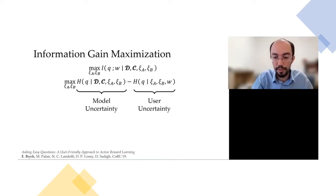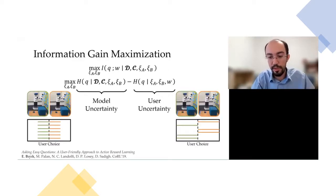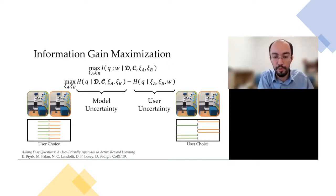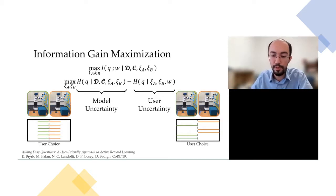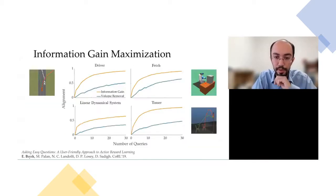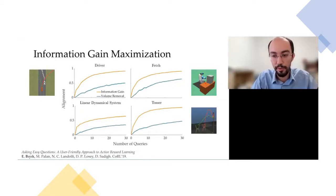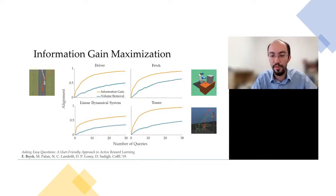Going back to our example queries: the model uncertainty is maximum for both. However, for the identical trajectories query, the user uncertainty is also maximum because regardless of the weight sample, the user has 50% probability of choosing each option. On the other hand, the informative query minimizes user uncertainty because the user will be very certain about their choice given a weight vector W. Our information gain method significantly outperformed the volume removal method — in simulations we learned the user's objective within as few as 30 queries, as opposed to 100 previously.